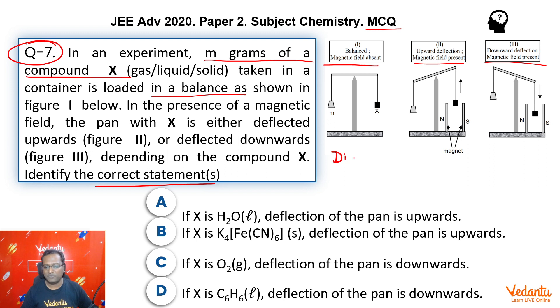Now we know that if we have a diamagnetic substance, diamagnetic substances are repelled by magnetic field. So they will be deflected up.